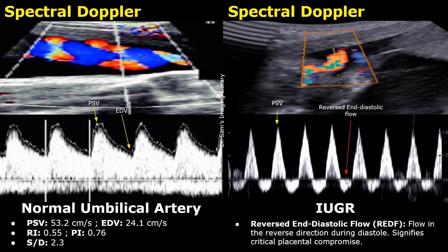Reversed end-diastolic flow, or REDF, signifies critical placental compromise. Blood flow is in the reverse direction during diastole. On spectral Doppler, we will see flow during the late diastole below the baseline. This flow below the baseline indicates reversed end-diastolic flow. Calculating RI, PI, and SD ratio is not that important, because we can clearly see flow reversal during late diastole, indicating severe blood flow resistance and placental compromise.